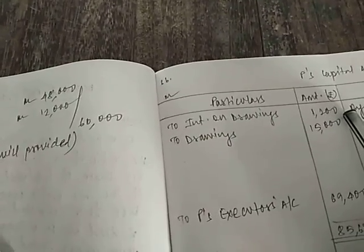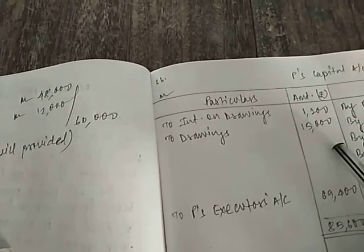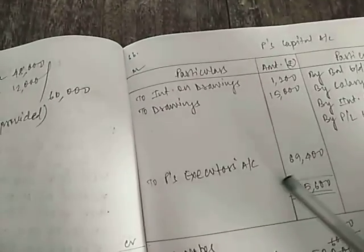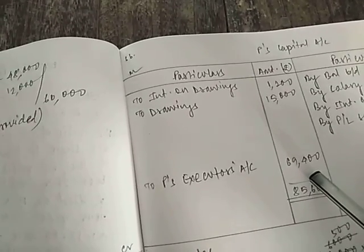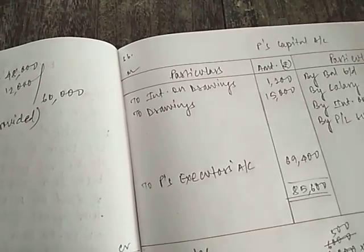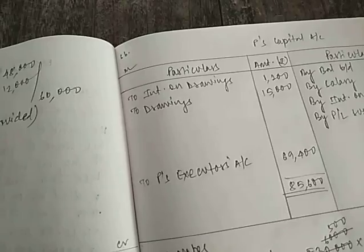So this 2,000 is also provided. On the debit side interest in drawings was calculated 1,200 and the drawings was provided 15,000. When you debit both the things and you balance, you will get P's executor's account at 69,400. So you will get P's executor's account 69,400.